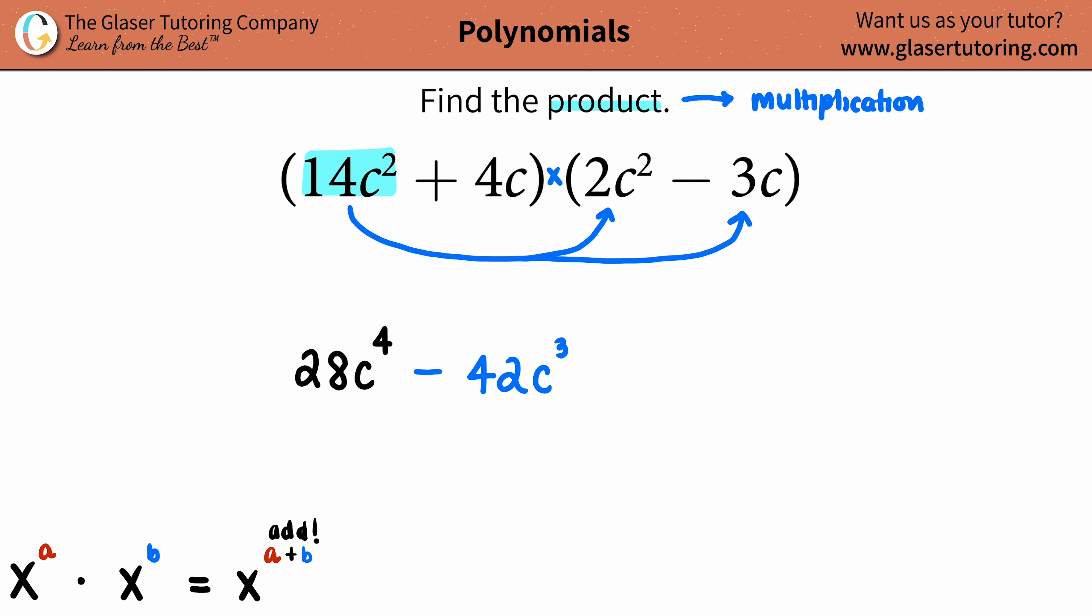If you have different variables with different degrees, you cannot add or subtract these. C to the fourths like to be with c to the fourths. C to the threes like to be with c to the threes. We were fair with the first term. Now you move on.